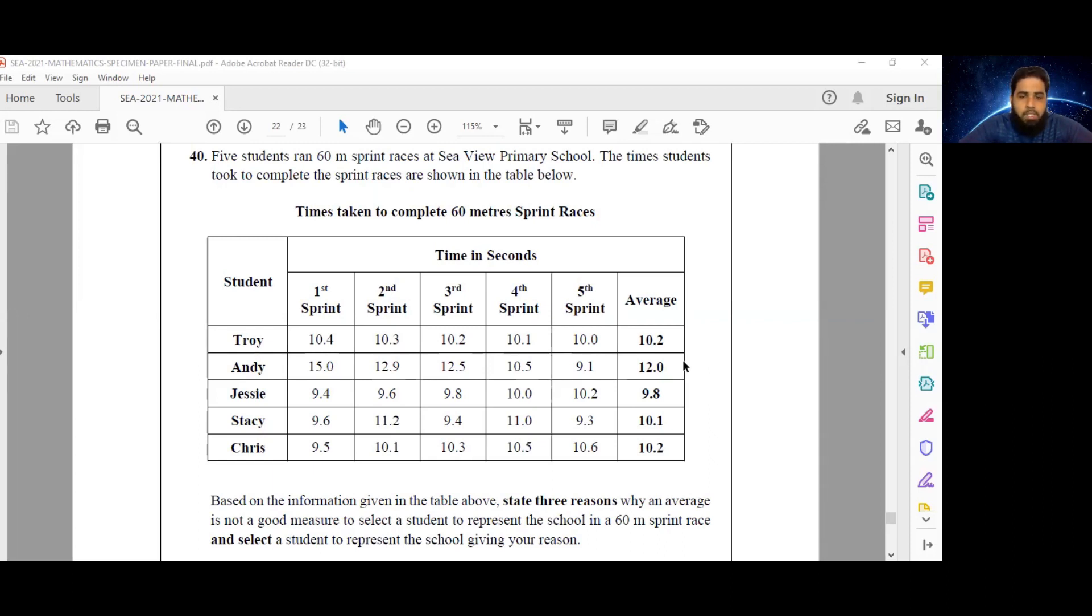Based on the information given in the table above, state three reasons why an average is not a good measure to select a student to represent the school in a 60-meter sprint race and select a student to represent the school given your reason.